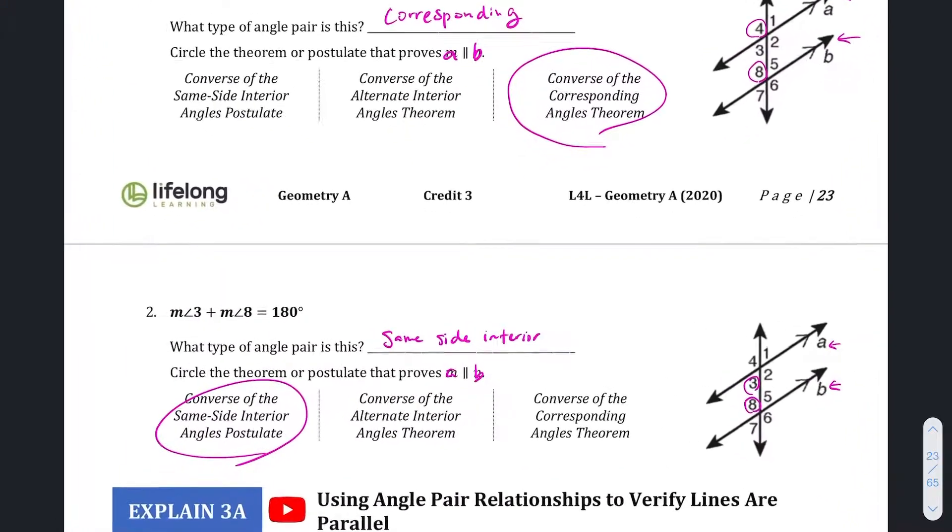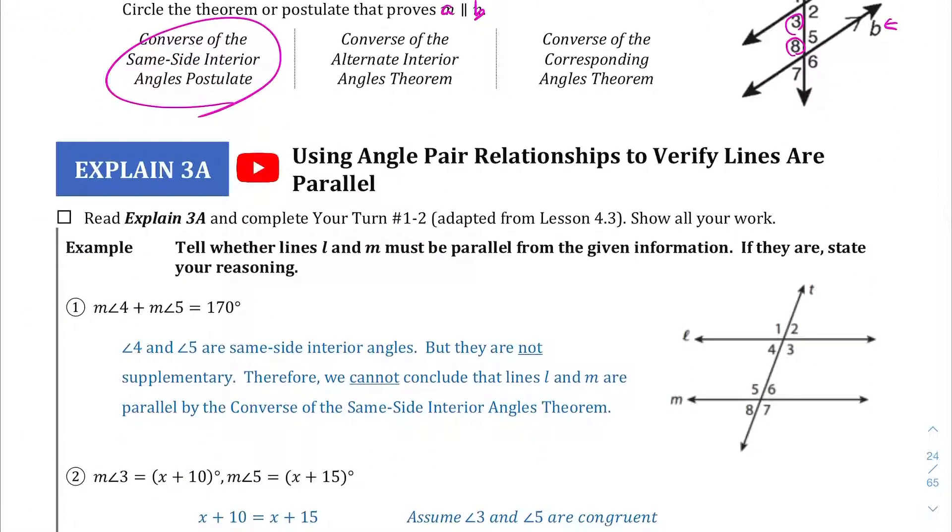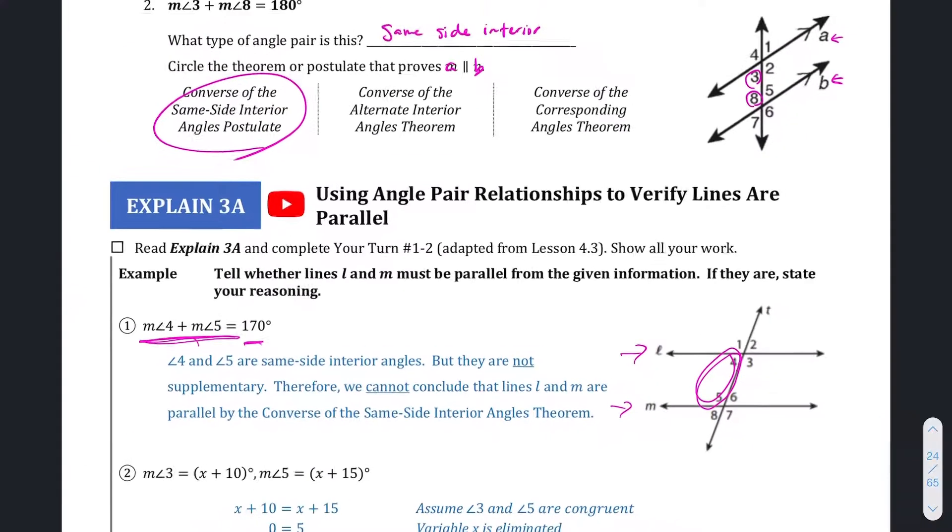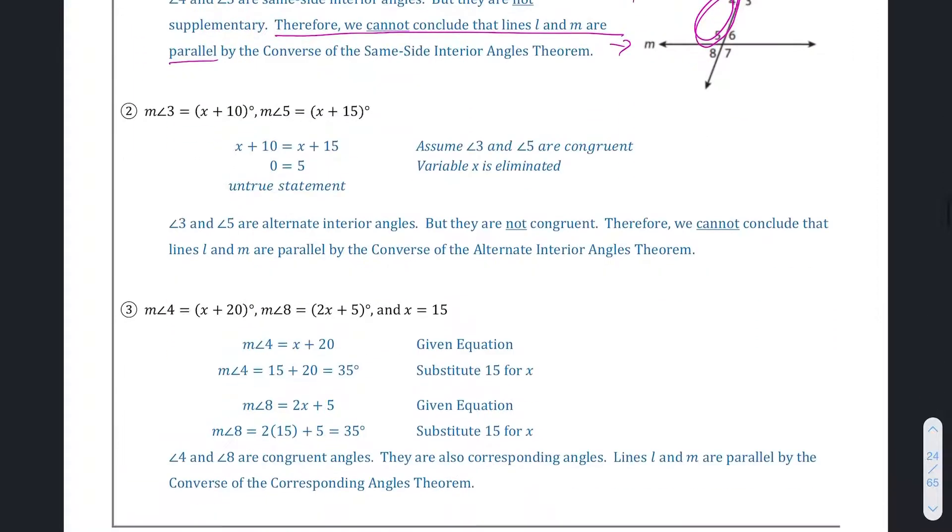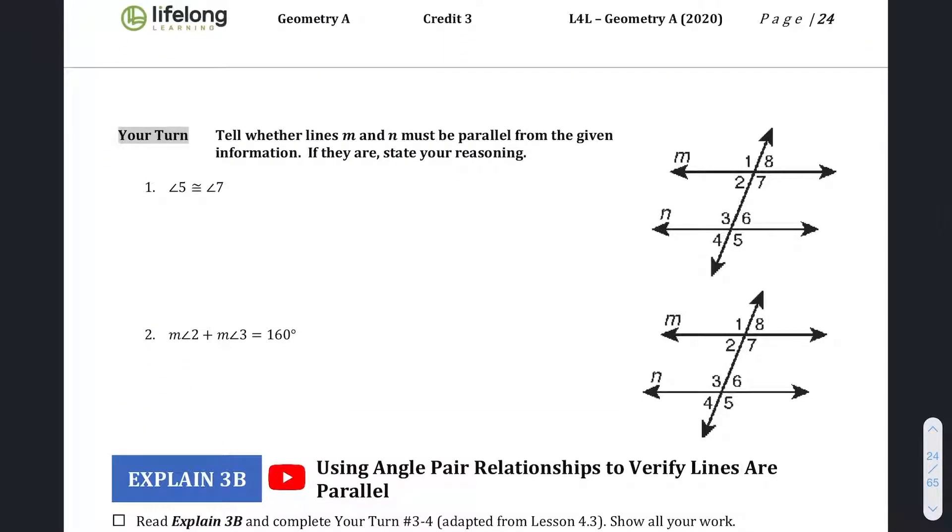Okay, so we're going to continue on and use all the angle pair relationships that we've learned to verify whether or not lines are parallel. Because sometimes, if it comes out to be an untrue statement, well, then they are not parallel. So for example, in question or in example number one here, we are told four and five are equal to 170. Well, four and five are same side interior. And if same side interior angles are supplementary, then the lines are parallel. In this case, it only equals 170. So therefore, what we are proving is that M and N are not parallel. We cannot conclude that lines L and M are parallel. Same thing with two and three. I won't go into it too much in depth, but you will probably need those examples for the next page.